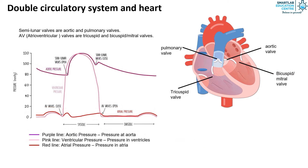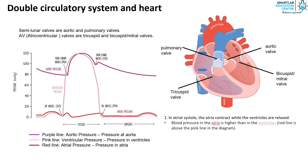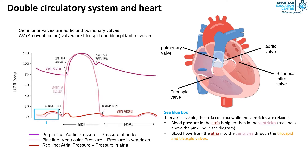In the first stage of the cardiac cycle, it is the atrial systole. The atria contract while the ventricles are relaxed, causing the blood pressure in the atria to be higher than in the ventricles. On the cardiac cycle graph you can see the red line is above the pink line, showing that the pressure in the atria is higher than in the ventricles. Blood flows from the atria into the ventricles through the tricuspid and bicuspid valves.